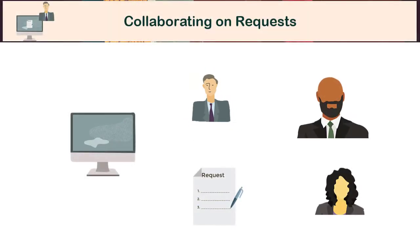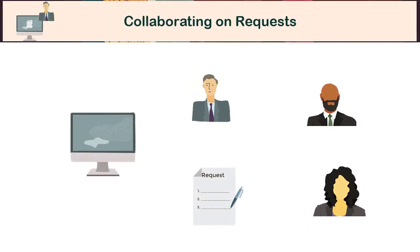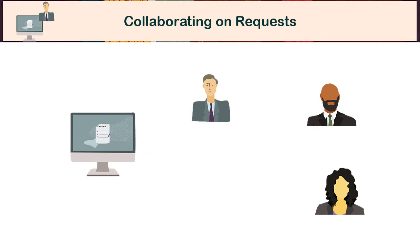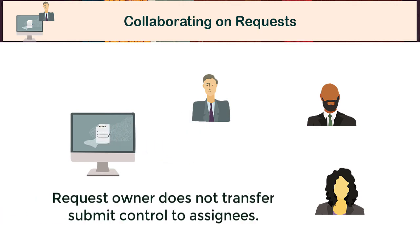Casey, Kerry, and Anita can make their updates while only Casey can submit the request. This contrasts with assigning a request, in which Casey would transfer submit control to the assignee.